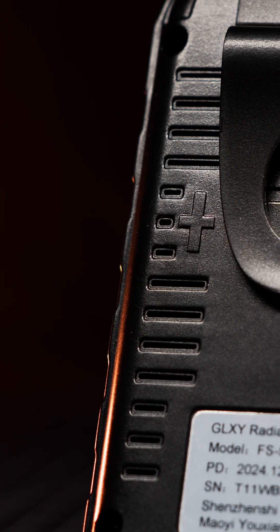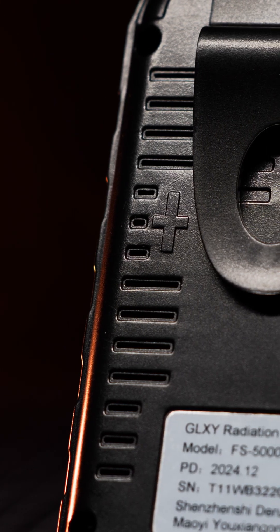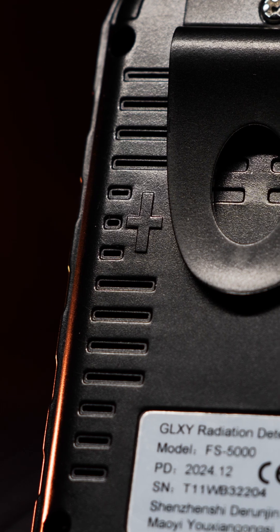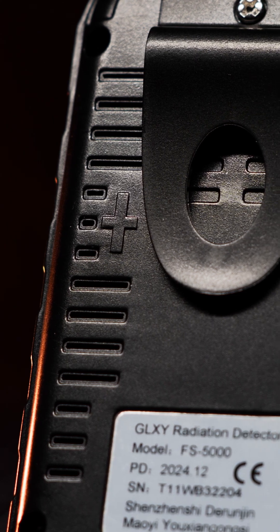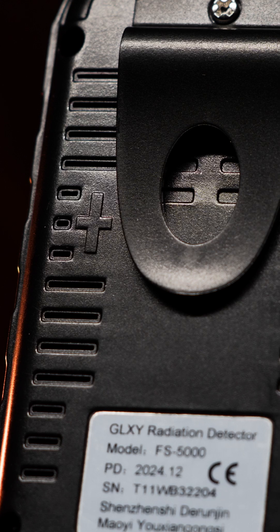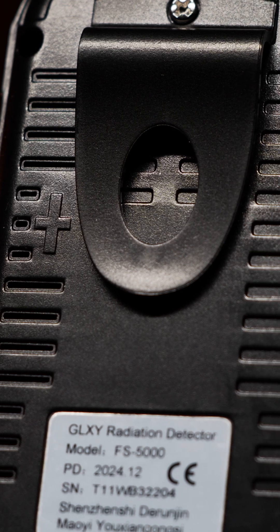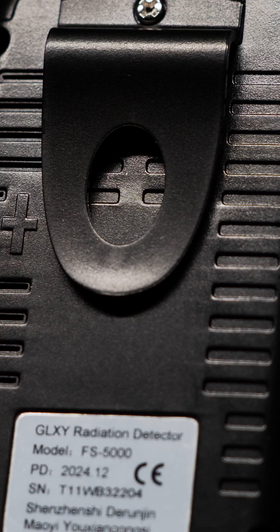On the back of the unit there are small openings in the body which allow beta particles to reach the Geiger Müller tube. However, there is no beta shield, which is a big bummer, as it makes all the dose readings in microsieverts per hour pretty much pointless, as the beta activity will highly inflate them.